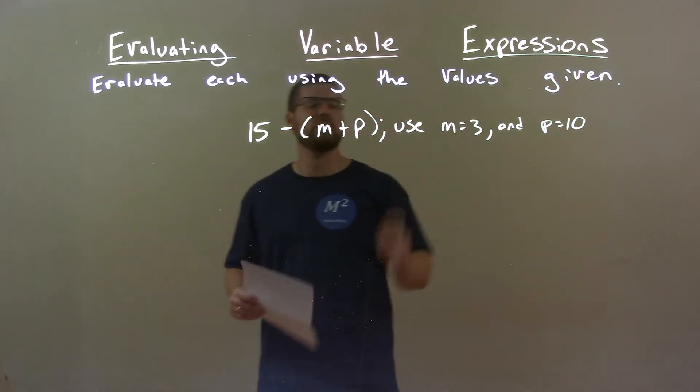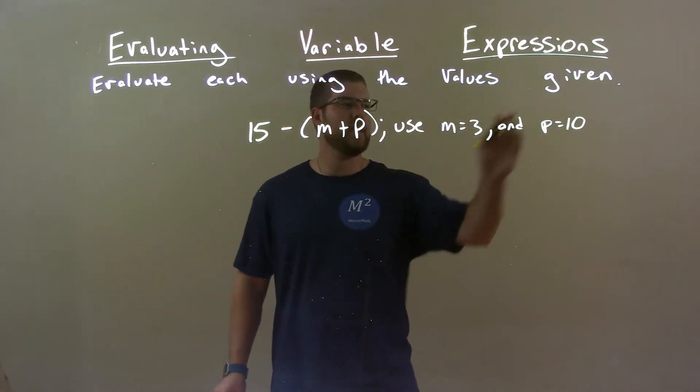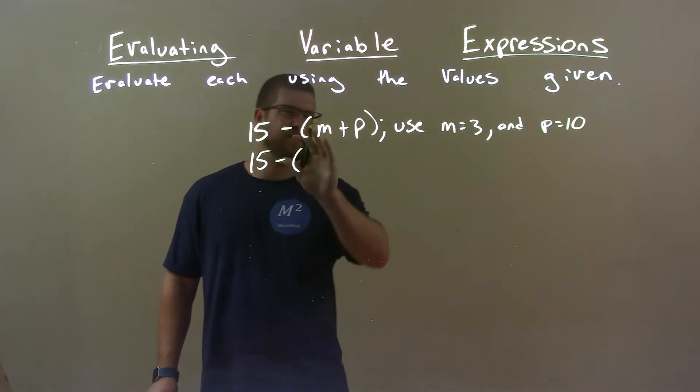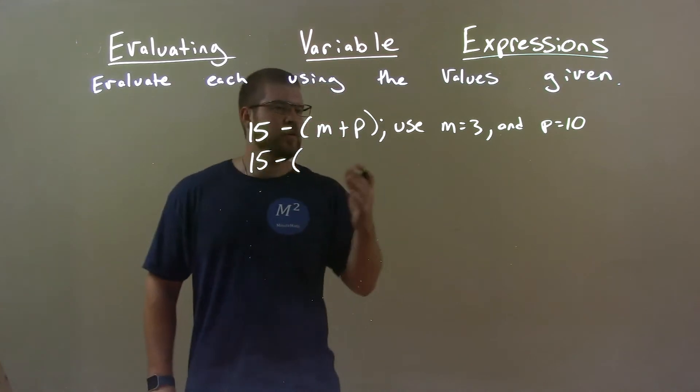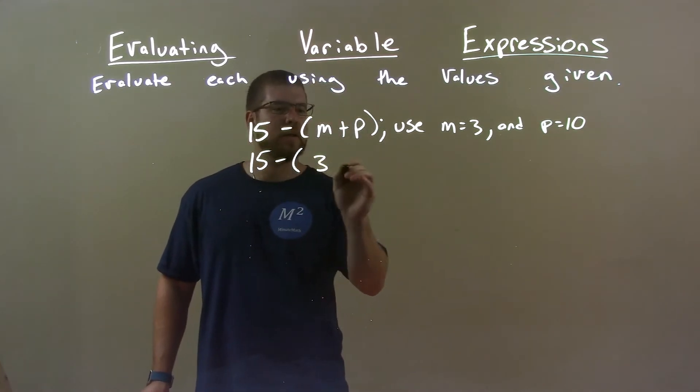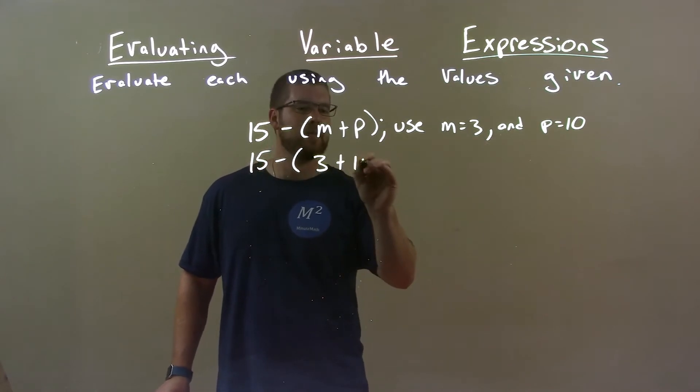First step, substitute our values in. M for 3 and P for 10. Use parentheses if necessary here. I wouldn't necessarily do that because we already have parentheses, up to you. But I think we can do it here. 3 for M and P is 10.